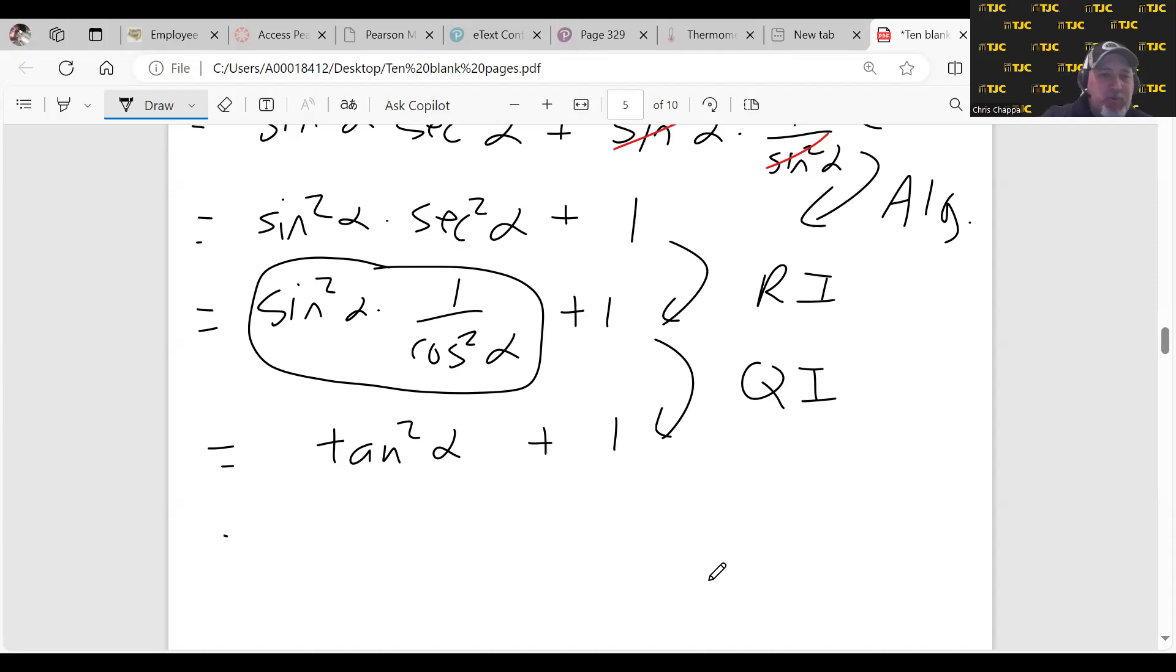Oh wait, tangent squared plus one, that's secant squared. That is a Pythagorean identity. So the secant squared did come back again as a result of a Pythagorean identity.